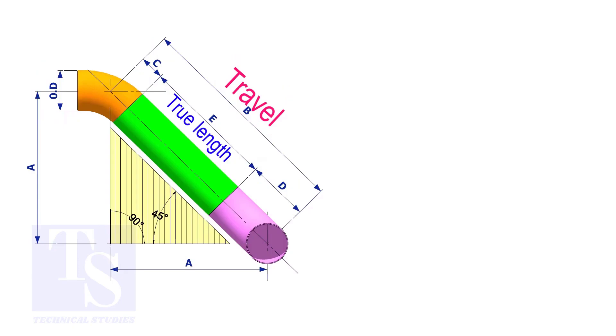Assume that the elbows are short radius. Nominal pipe size is 4 inch. The travel length is 1500 millimeters. The joint gap is 3 millimeters. Calculate the true length of the spool.